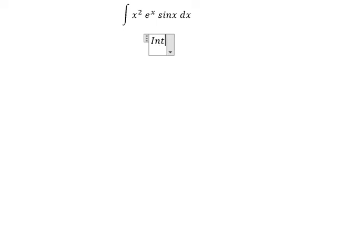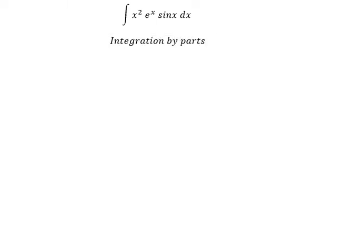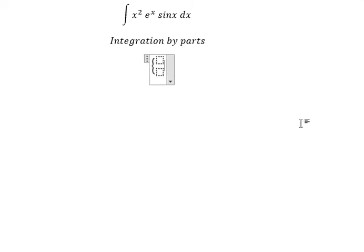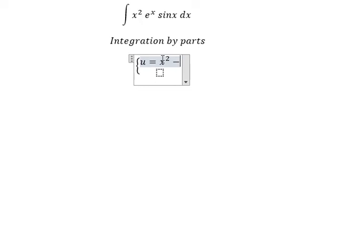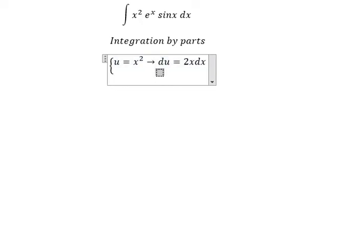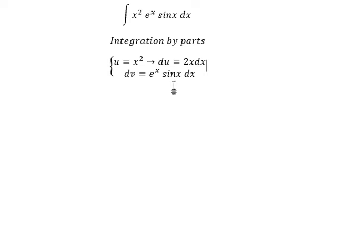We need to use integration by parts. I will set u equals x squared, so du equals 2x dx. And dv equals e to the power of x times sin(x) dx. Now I will show you the technique to find this integral.